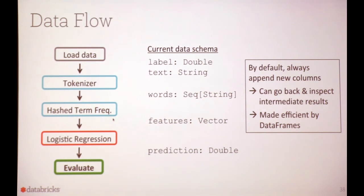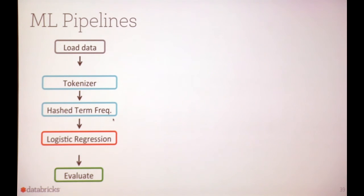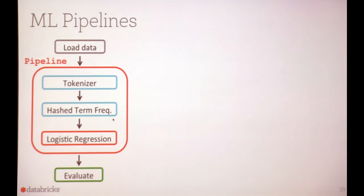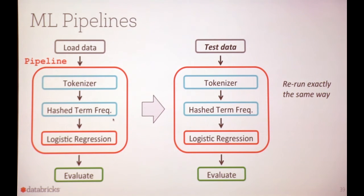By default, we always append new columns, so at the end you have a DataFrame with all your intermediate results that you can go back and inspect. This is made efficient by DataFrames — you essentially contain in the DataFrame a way to construct that data but don't have to materialize it except when you need it. A pipeline wraps the critical part of this workflow — the feature extraction and model training — so you can simply take new data and rerun the workflow on it in the same way.